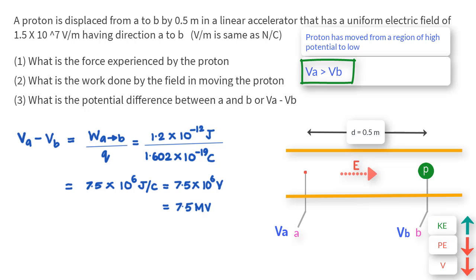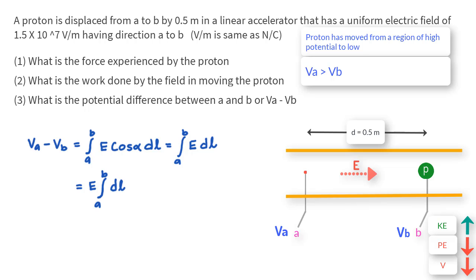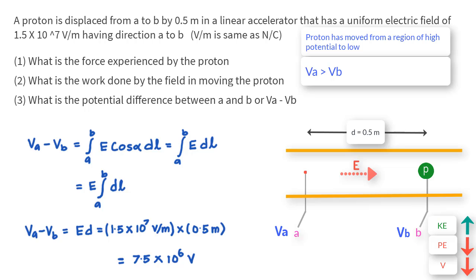Let us verify this answer using the equation VA − VB = ∫E cosα dL from A to B. Since the angle α between E and the displacement is always 0 in this problem — they are always parallel — cosα equals 1. So this becomes E × ∫dL from A to B, which equals E × D. Substituting the values, VA − VB = E × D = 7.5 × 10⁶ volts, the same answer as before.